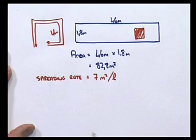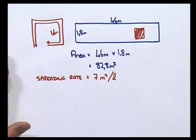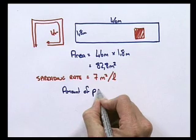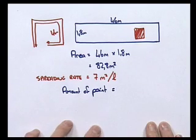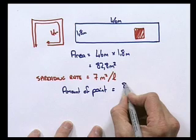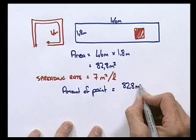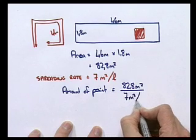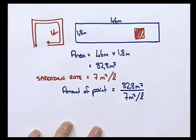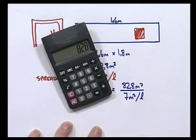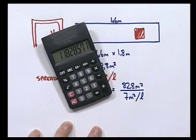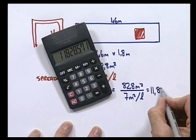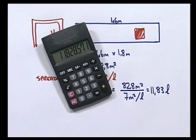Now, we can use that information to determine how much paint is needed. So, the amount of paint is equal to 82.8 square meters divided by 7 meters squared per liter. When we do that on our calculator, we're going to get 82.8 divided by 7. We're going to need 11.83 liters of paint.